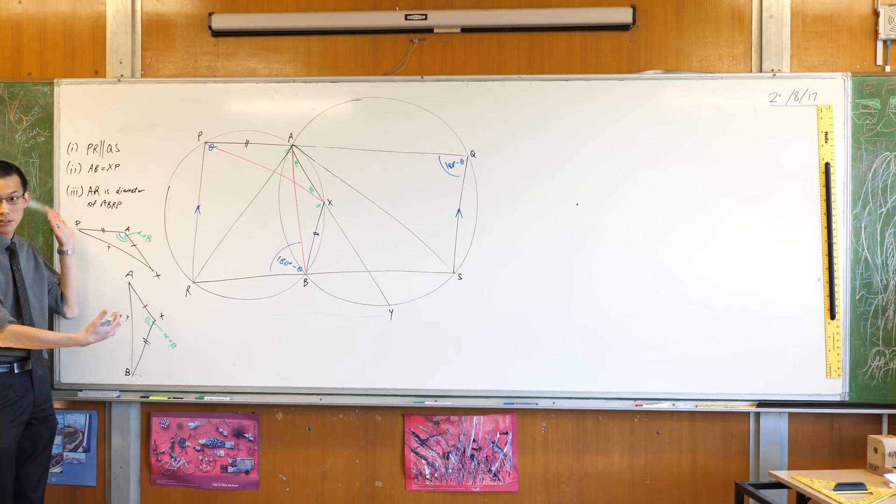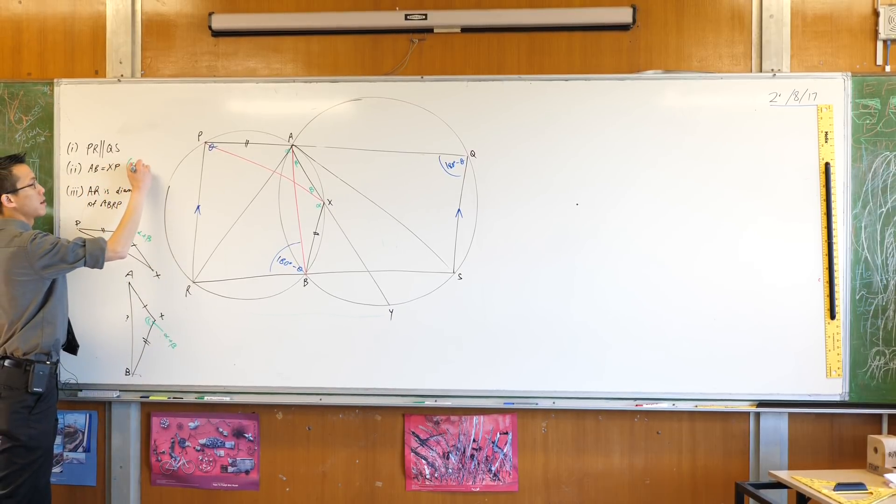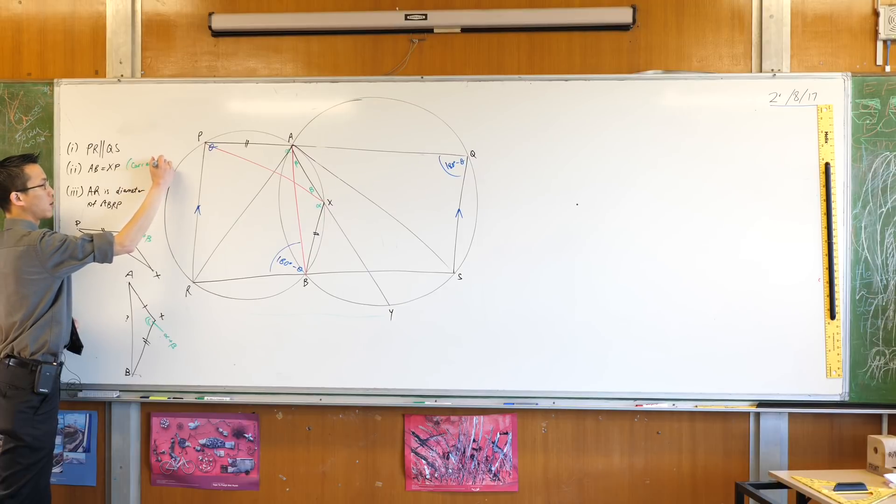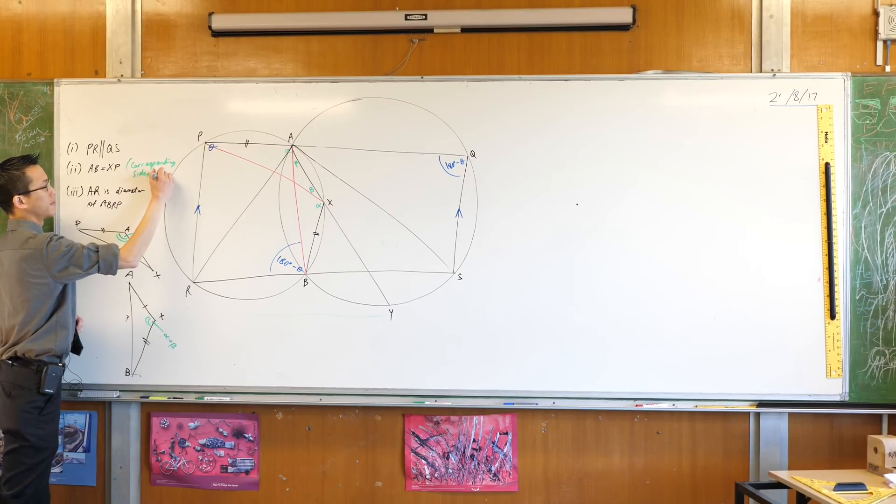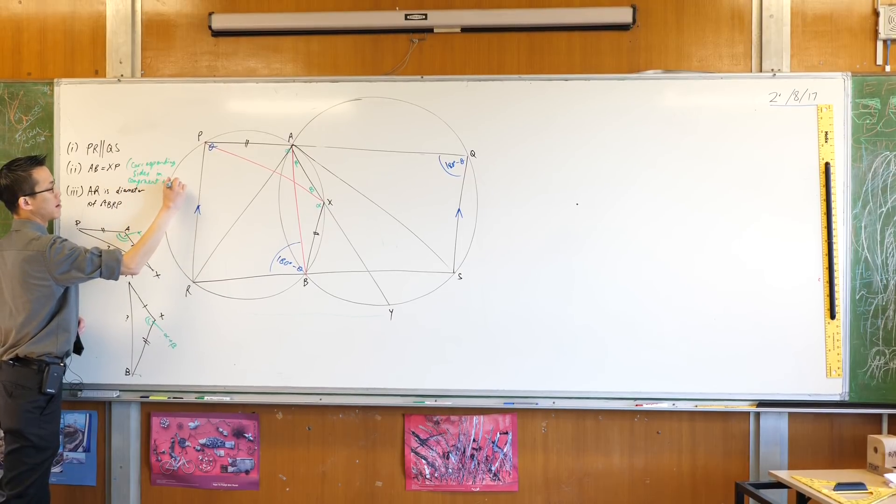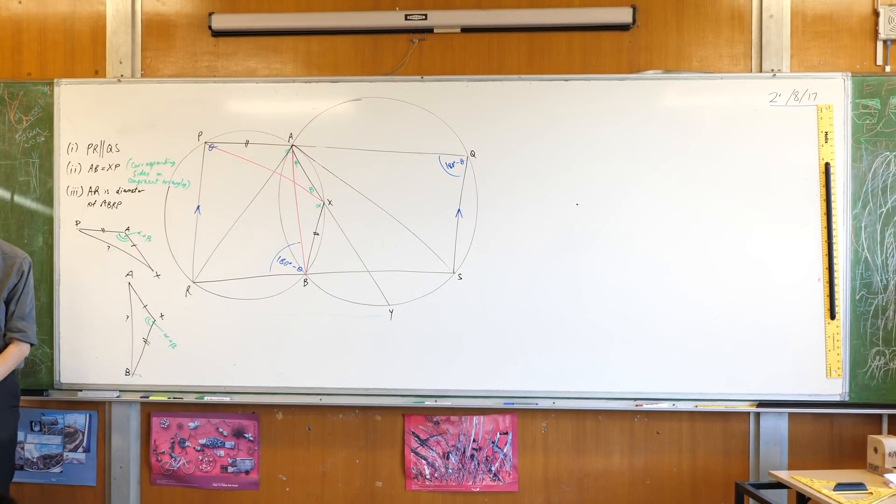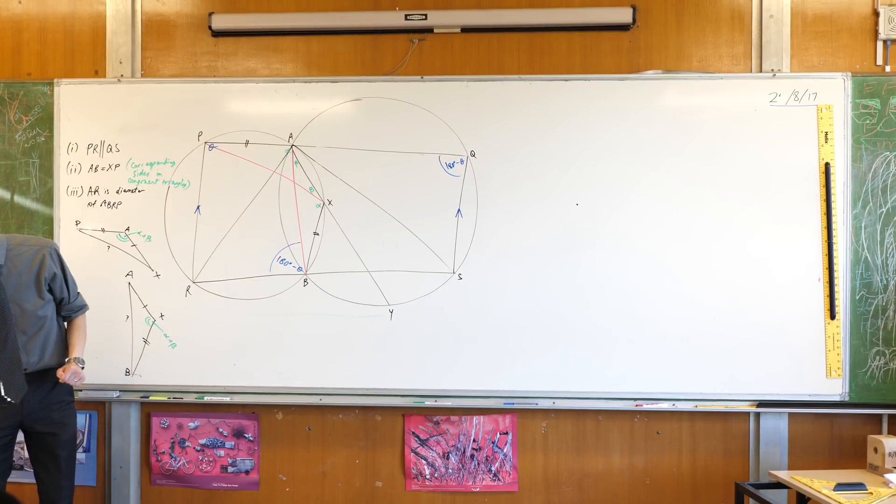Okay. So, ta-da! I got my congruence proof. And at last I can say AB equals XP. Excuse me. Reason: corresponding sides in congruent triangles. Okay. So this brings us up to speed. I hope you've gotten a bit more of a sense of the question now. So let's do the last part.